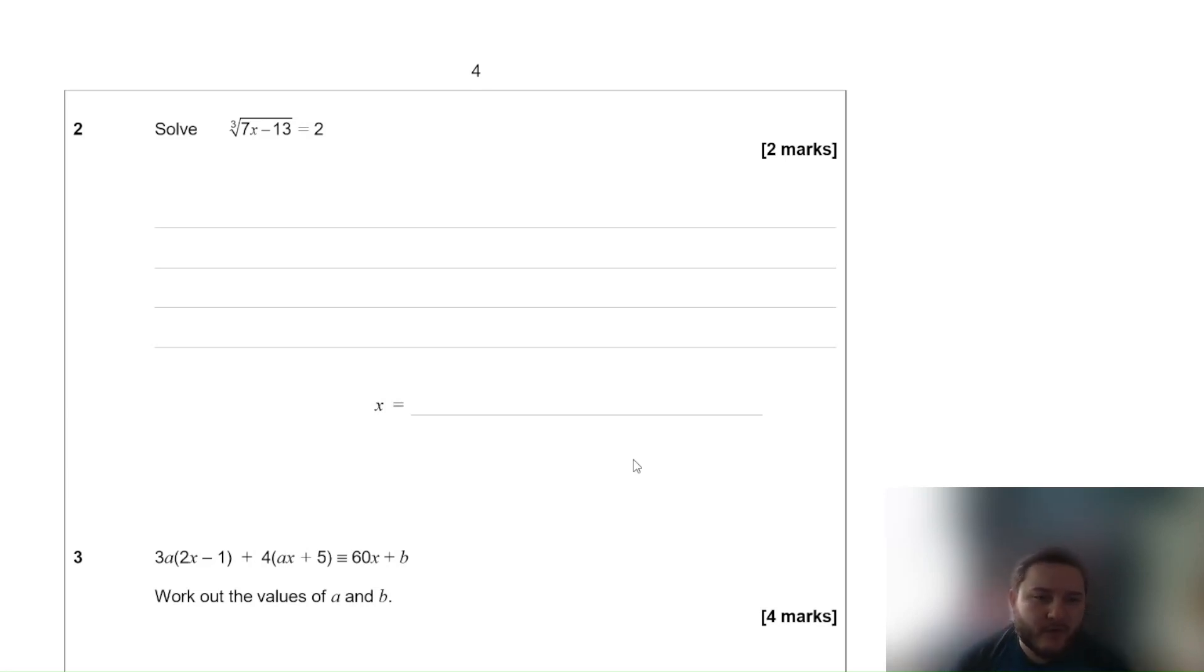Question 2 then. Solve the cube root of 7x take away 13 is equal to 2. Well if you want to solve an equation like this you do the opposite. So because there is a cube root we need to cube both sides. So we get 7x take away 13 is equal to 2 cubed. Well 2 cubed is 8. Then we add 13 to both sides, so 7x is equal to 21. And then we divide both sides by 7. So x is equal to 3. We could check our answer by substituting 3 back in. 7 times 3 is 21, take away 13 is 8, the cube root of 8 is 2.